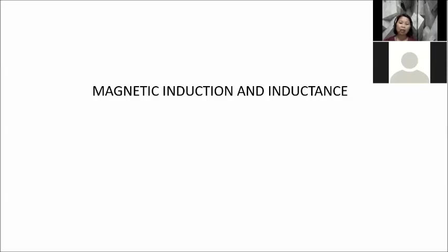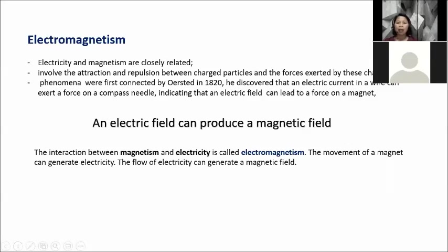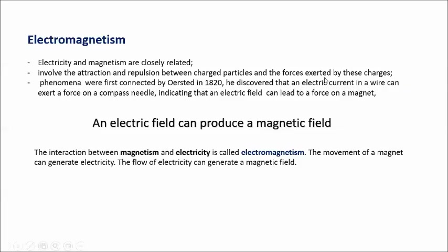Let us define electromagnetism. Electricity and magnetism are closely related; they involve attraction and repulsion between charged particles and the forces exerted by these charges. These phenomena were first connected by Oersted. In his 1820 experiment with current and compass, he discovered that an electric current in a wire can exert a force on a compass needle, meaning an electric field can produce a magnetic field.